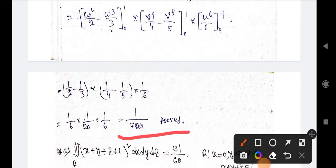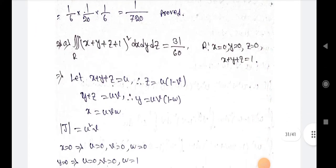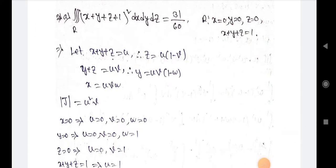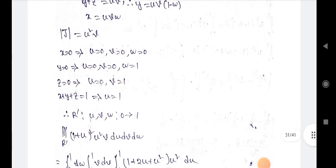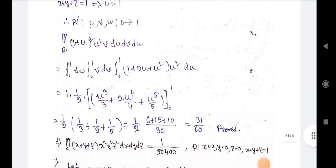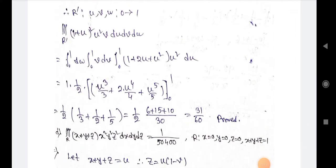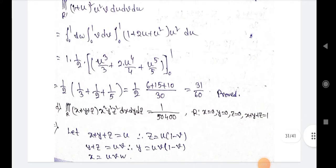Next example: triple integration of (x+y+z+1)² dx dy dz equals 31/60, over the region R where x=0, y=0, z=0 and x+y+z=1. Let x+y+z=u, similarly as the above example. We find the limits, then integrate and putting in the values we get 31/60.